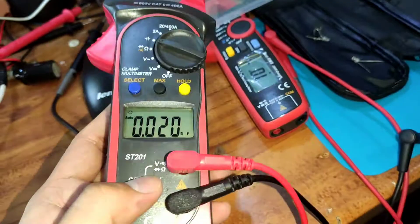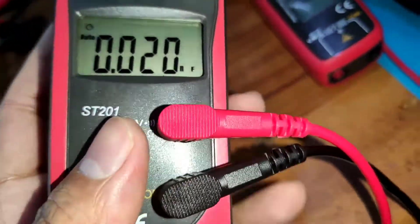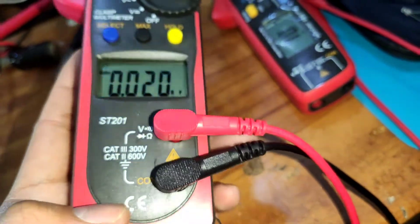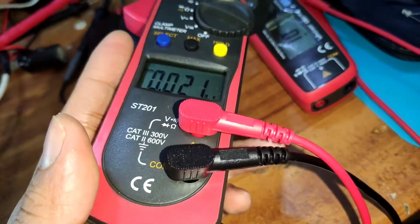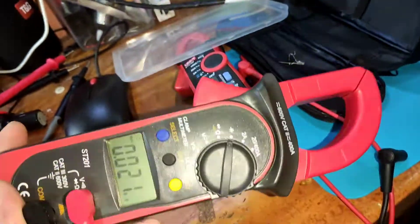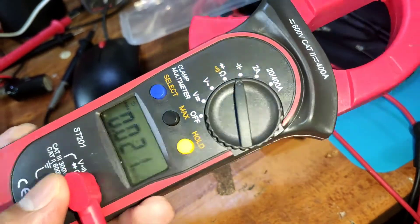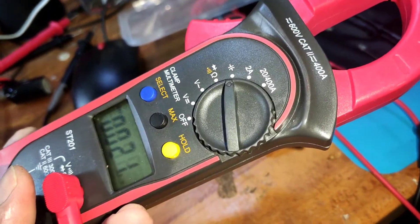Overall for this ST-201 for only 500 pesos or $10 it's kind of worth it. For a cheap device like this you're going to get fairly accurate readings for capacitance, resistors, and diodes.